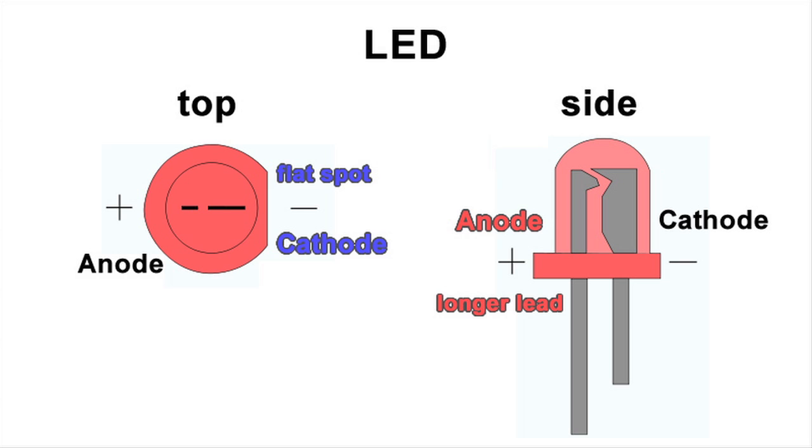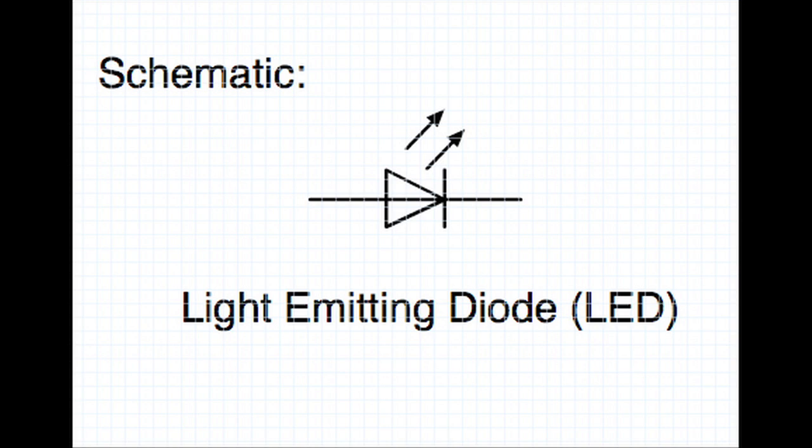Also, the cathode should correspond with the flat side of the LED. In the schematic symbol, the cathode lead is the side with the line.